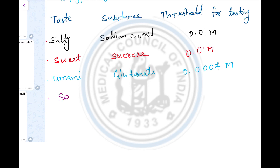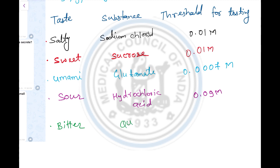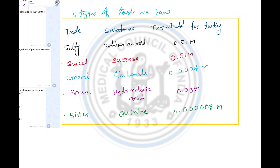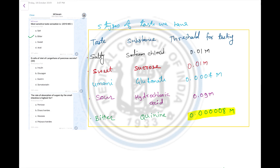The fourth taste is sour — the substance is hydrochloric acid. The fifth and last taste is bitter, and the threshold for tasting is 0.0001 molar. More specifically, it is 0.00008 molar, which is the most sensitive.